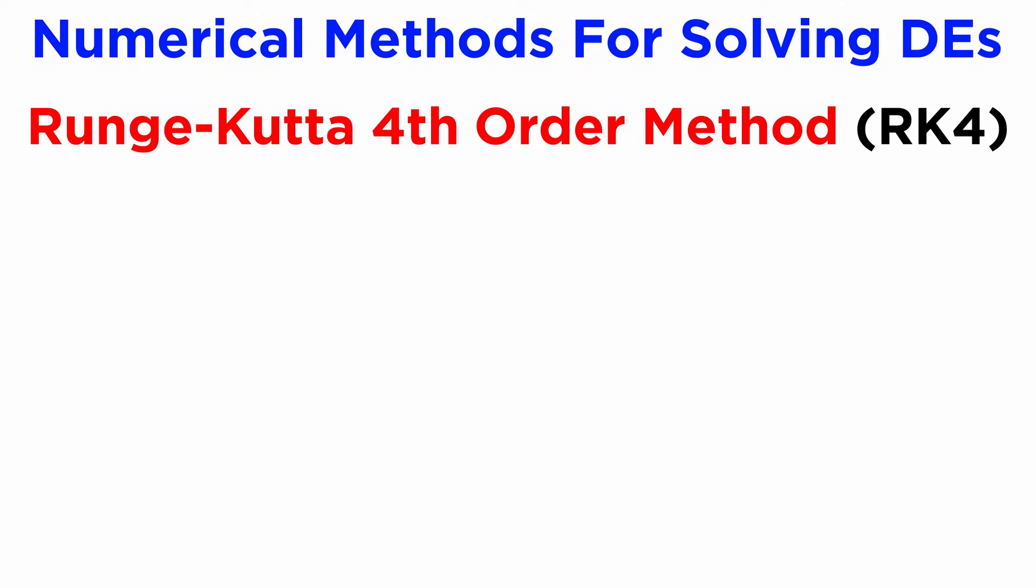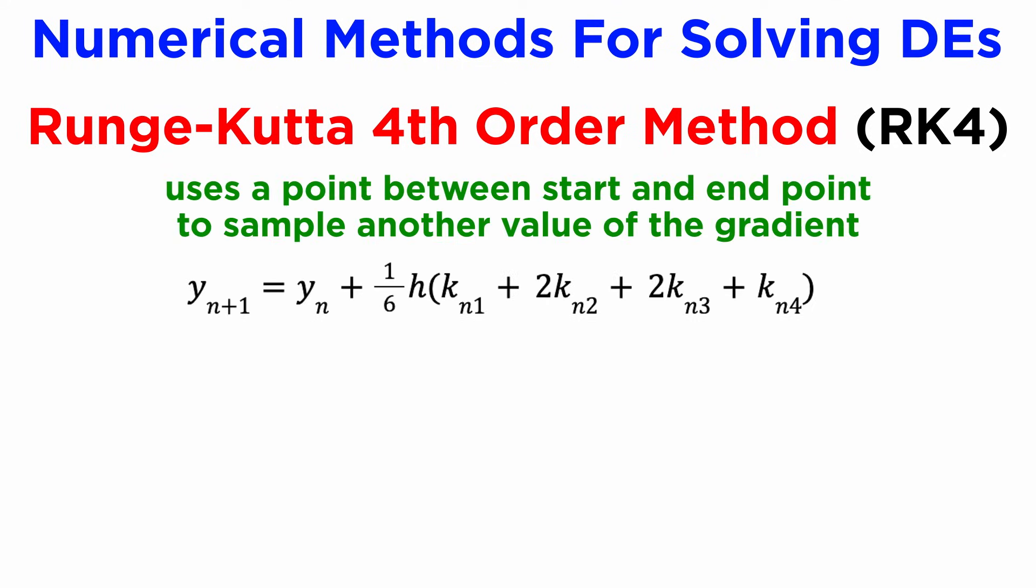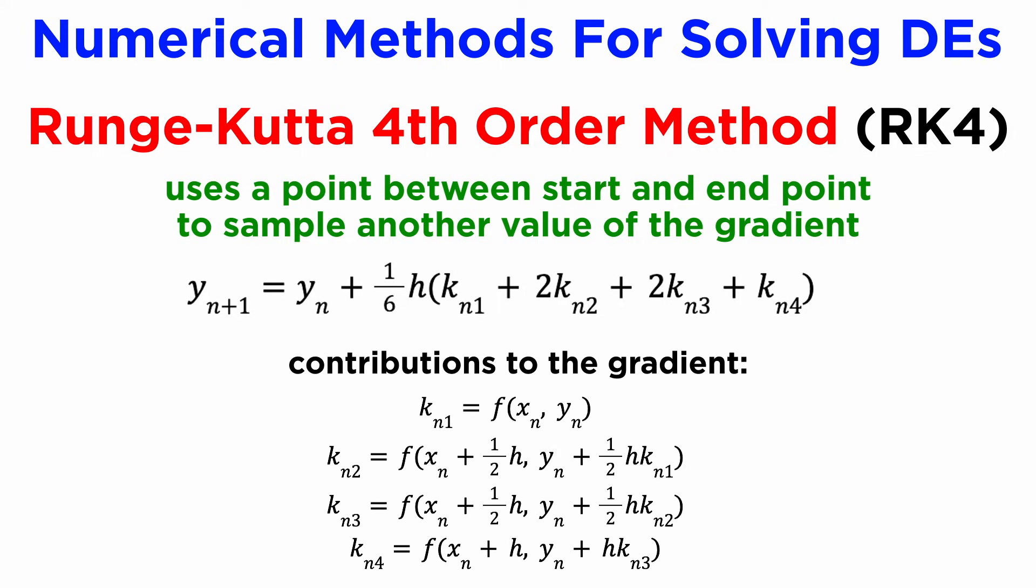An even more sophisticated algorithm is the Runge-Kutta fourth order method, or RK4, which uses a point positioned between the start and end point to sample another value of the gradient, and calculate the best estimate for where the solution is going. RK4 uses the formulae shown here, and it's actually the standard workhorse of most modern computational solvers for differential equations.